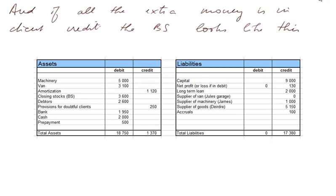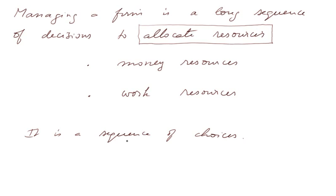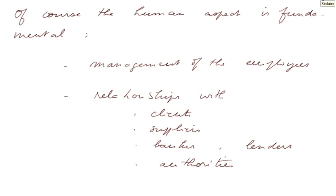A few last words in conclusion about income statements, balance sheets, and running a firm. Managing a firm is a long sequence of decisions to allocate resources — that's a very important idea. Essentially, what managers do is make choices about where to allocate money resources and work resources. Of course, the human aspect is fundamental: management of employees, human resources, and relationships with clients, suppliers, bankers, other lenders, and the authorities.